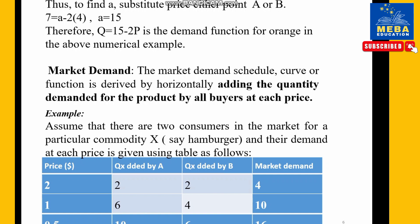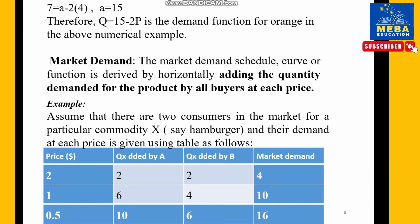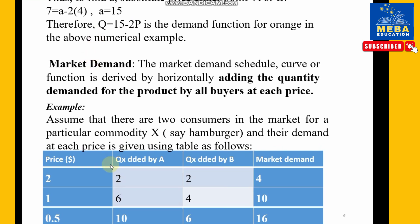In the demand function, 'b' is the slope coefficient for price P, and 'a' is the intercept. For example, the demand function for oranges. The market demand is the horizontal summation of individual demand curves at a given price level.